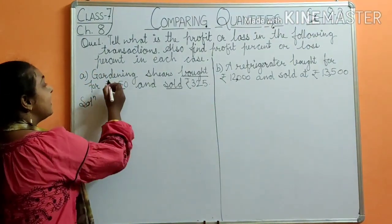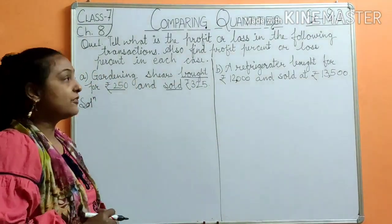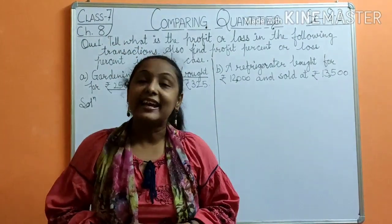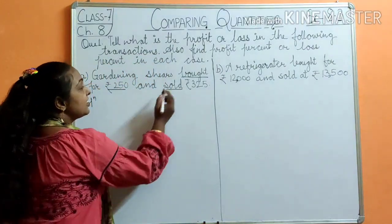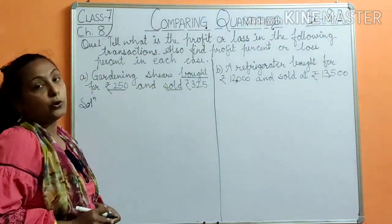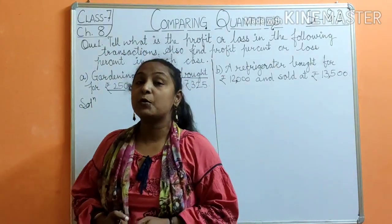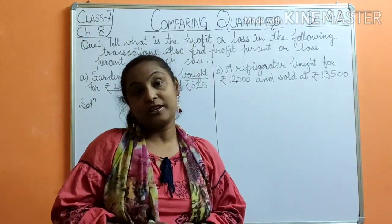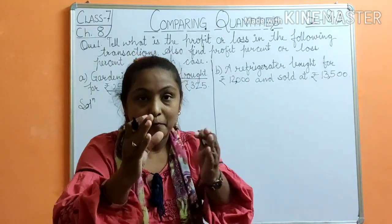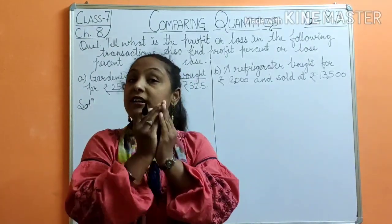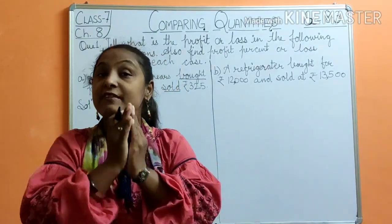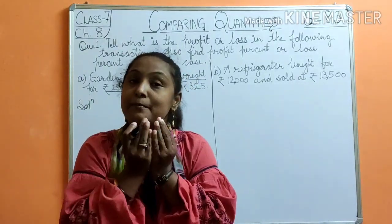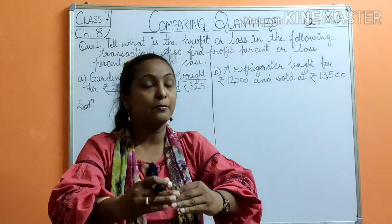First of all, Part A: gardening shares bought at Rs. 250 and sold at Rs. 325. Now you can see two things here — bought and sold. As I told you in my starting videos, 'bought' means the price I am going to buy it at, which is the cost price.